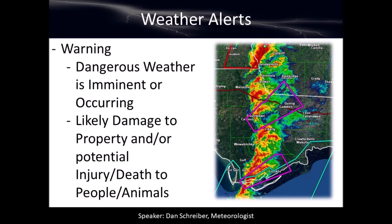A weather warning means it's happening now — it's imminent or occurring and likely to cause damage to property or people. It could kill you; it's dangerous. Tornado warning: take cover now. Severe thunderstorm warning: take cover now. Hurricane force winds — that's a warning. It is imminent or already occurring, and hopefully we get it out while it's still imminent, but sometimes the way we find out is that it's already happening. If you see a warning, pay attention and do something about it right now.